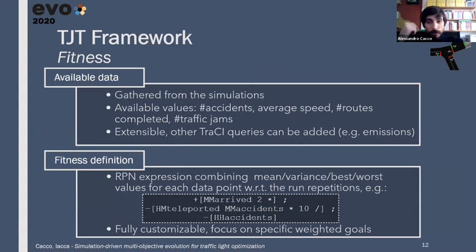For what concerns the fitness calculation, the information is gathered from the TraCI API. For our purposes, we used the number of accidents that happened, the average speed of the vehicles in the scenario, the number of routes that completed, and the number of traffic jams that happened in the scenario. This is extensible, as the Traffic Control Interface allows for many other queries, for instance, emissions or fuel consumption, given that the engine model of the vehicles that we introduced is correctly modeled.